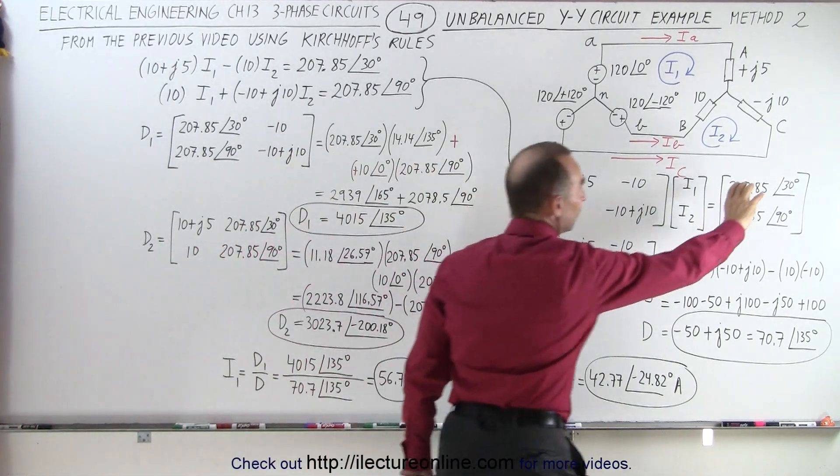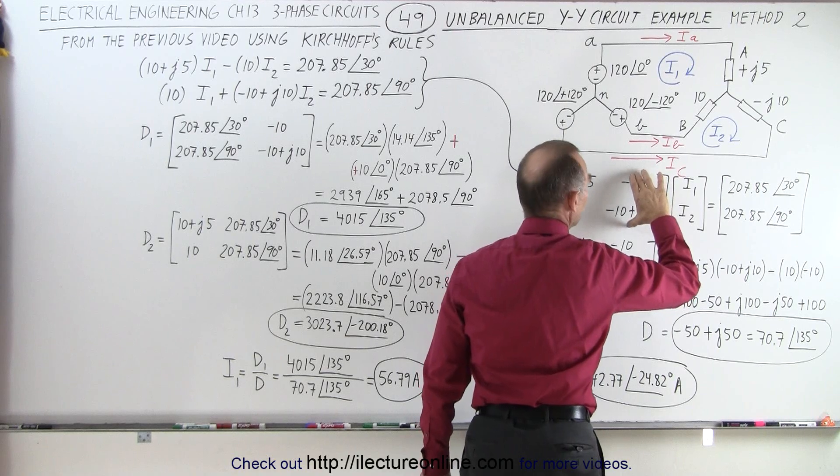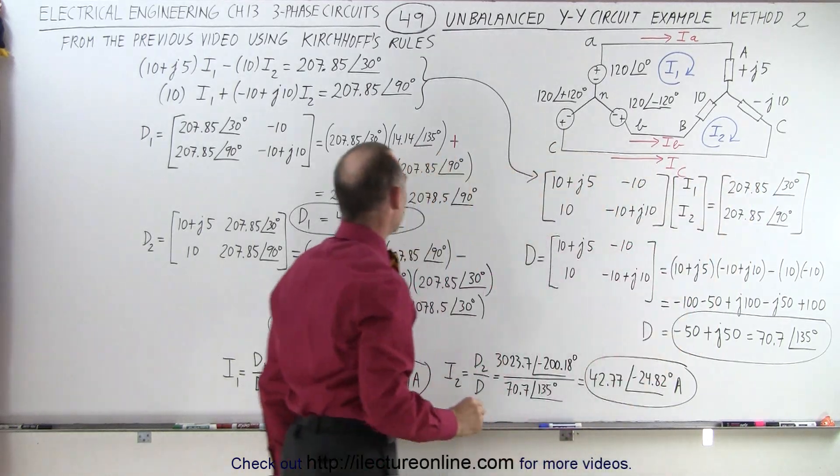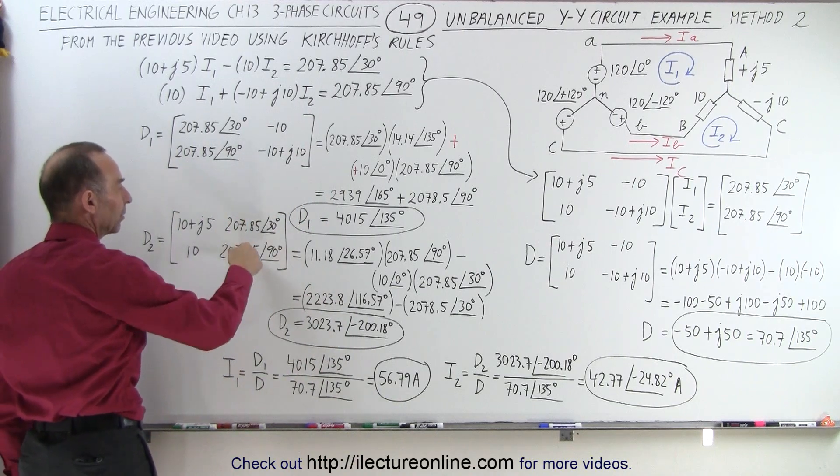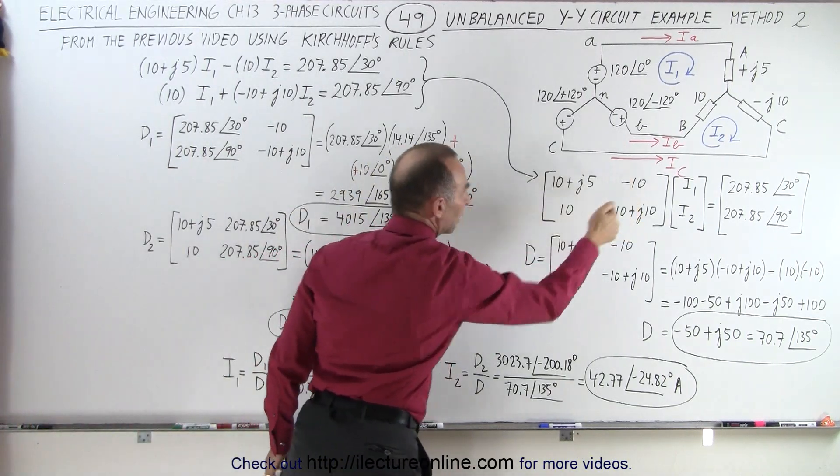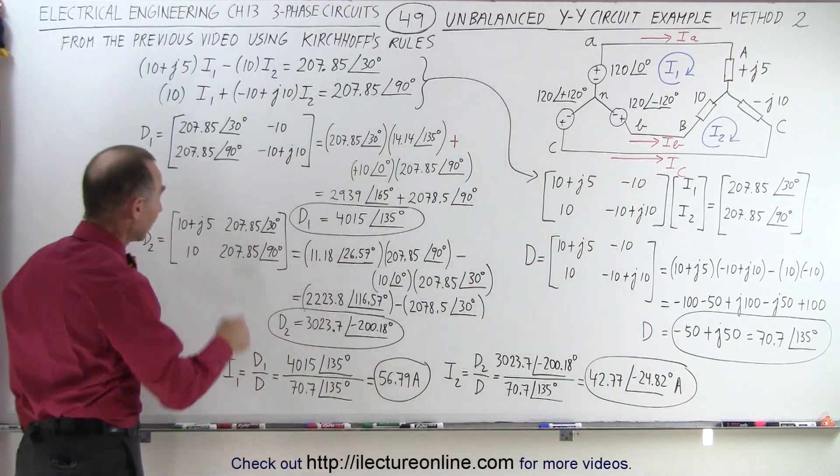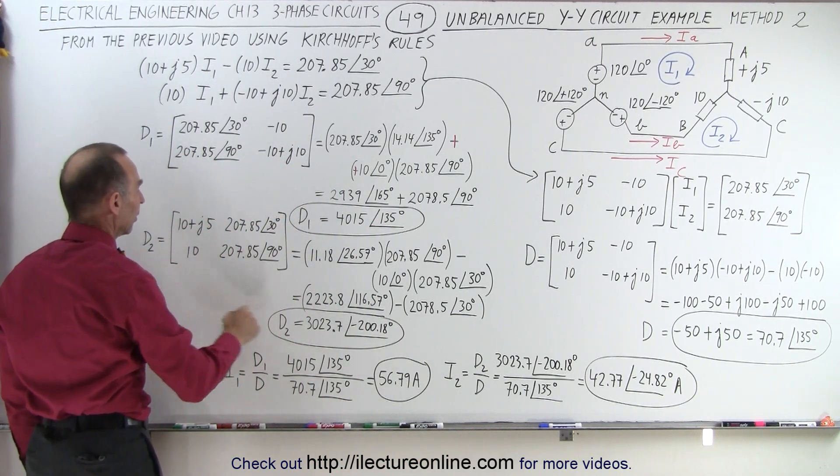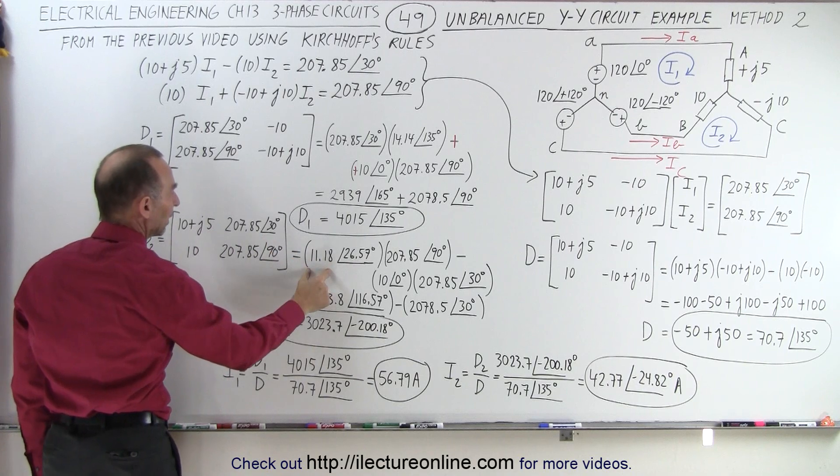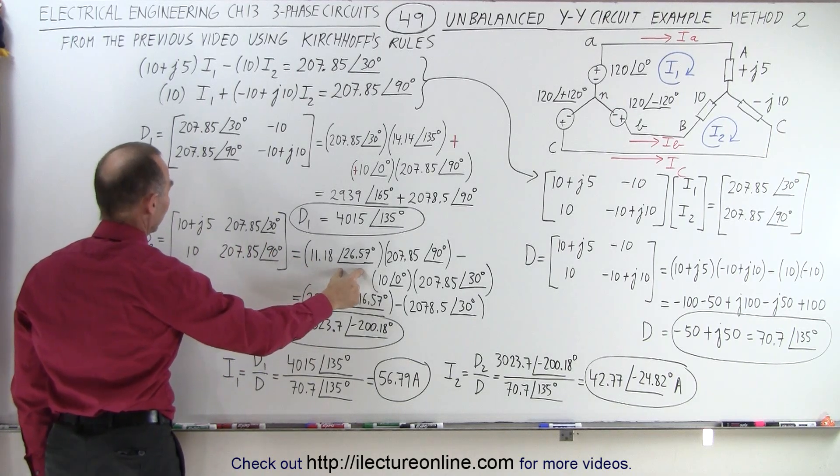We do it again by taking these two values and substituting these two by these two right here in our second matrix called D2. So notice the two back elements now become this instead of what we had over here. And again, we're multiplying the cross elements together and subtract when we multiply these two elements together. So this becomes 11.18 with a phase angle of 26.57.